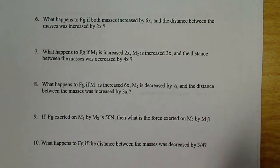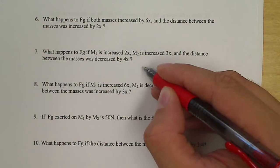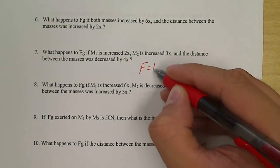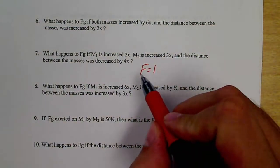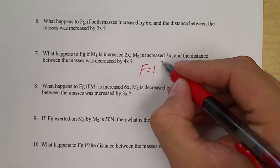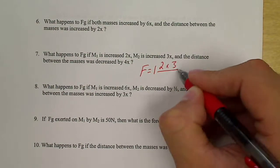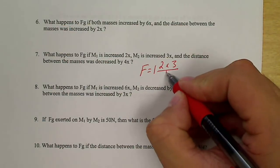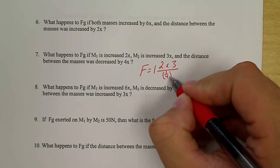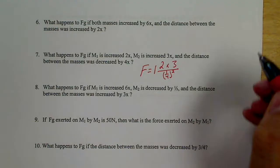So let's look at like number seven. So F equals, still has the same G, it never changes, it's constant. And then my first mass is increased by two, the second mass by three, and my distance is decreased by four. Decrease doesn't mean negative, we're actually looking at a fraction. And remember, it's squared.